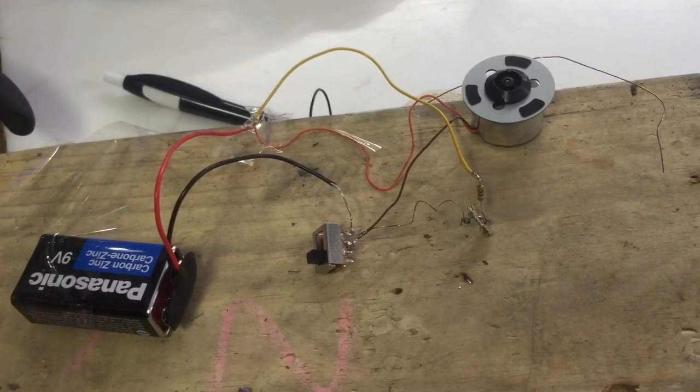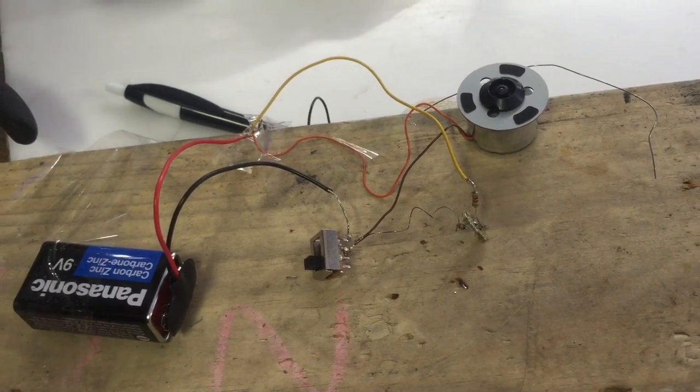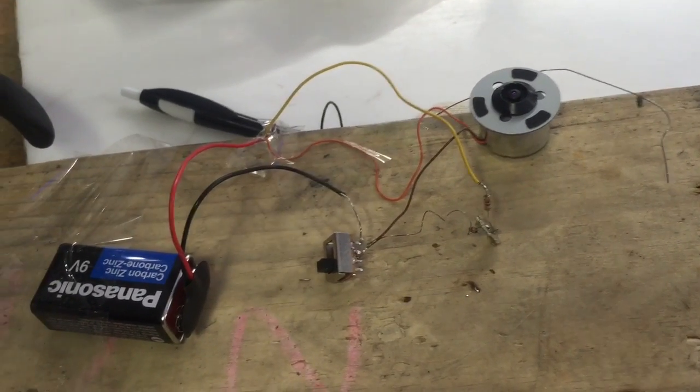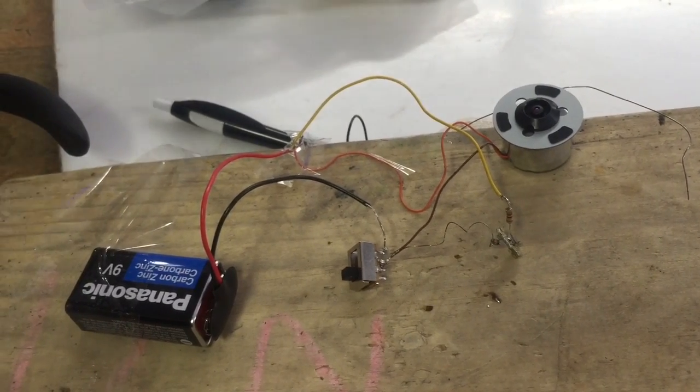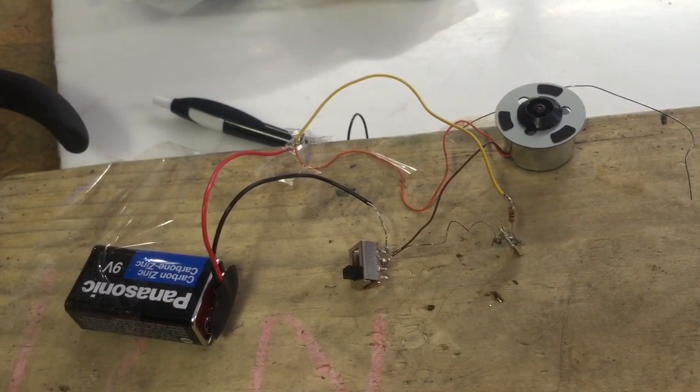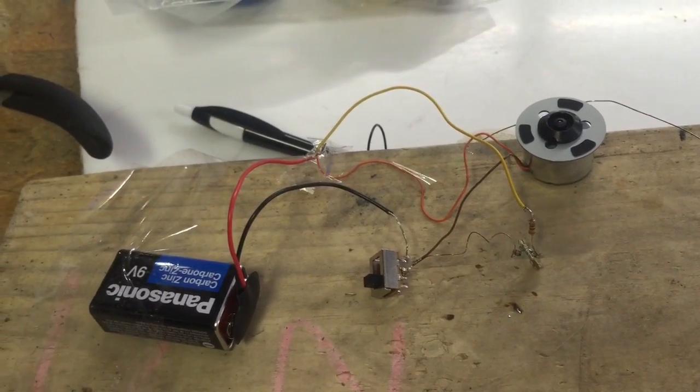So when you want to build like a craft toy, a model ship, something, you could wire it up with LED lights. You could check out my other videos on how to wire just the LED light. And also I made a model ship that's really cool. You should check that one out. And I wired that up with LED lights.